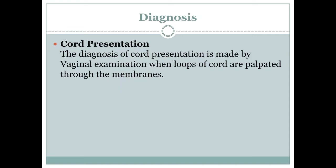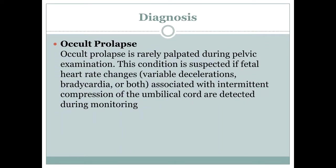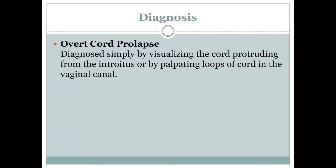Cord presentation can be diagnosed essentially via vaginal examination, where the loops of cord are palpated through the membrane. Occult prolapse may be difficult to diagnose simply with vaginal examination; however, it is suspected if there are fetal heart rate changes such as variable deceleration, bradycardia, or both. In overt cord prolapse, diagnosis can be made by visualizing the cord protruding from the introitus or by palpating the loops of cord in the vaginal canal.